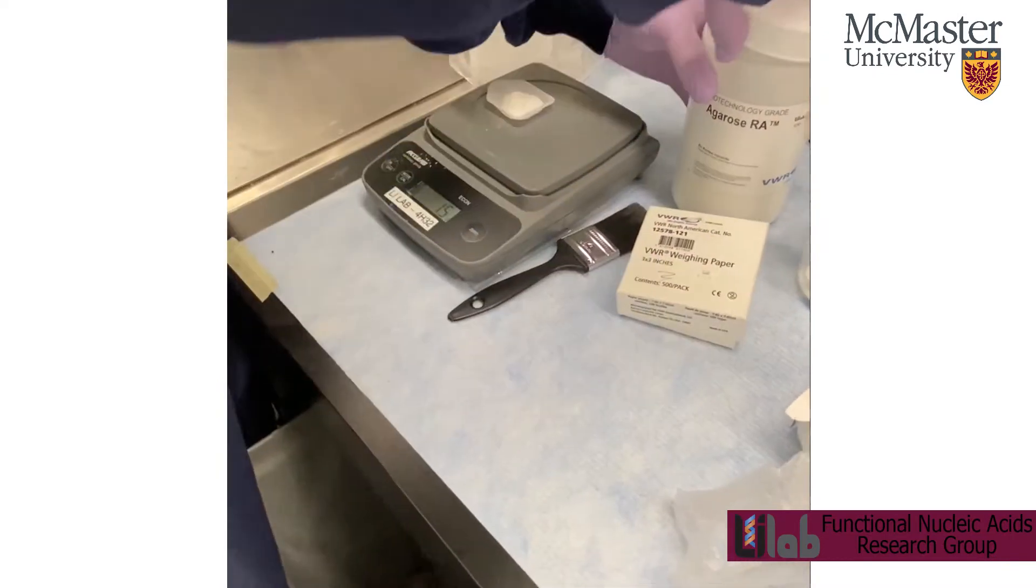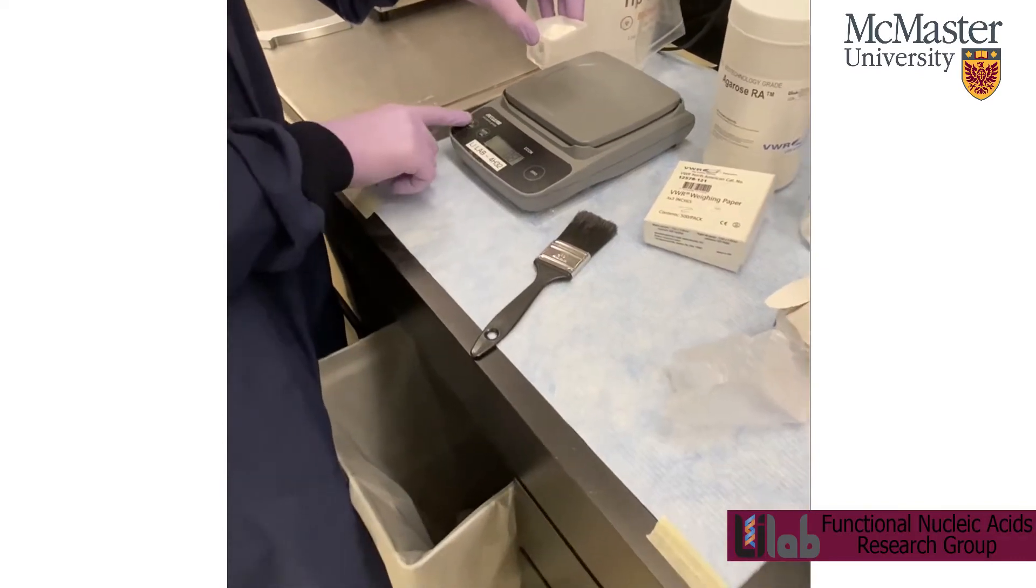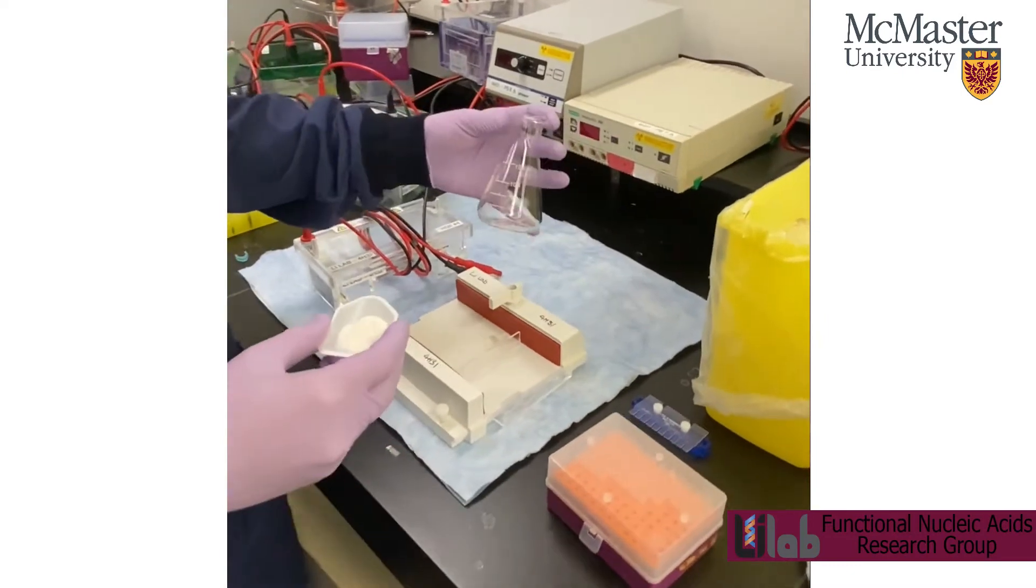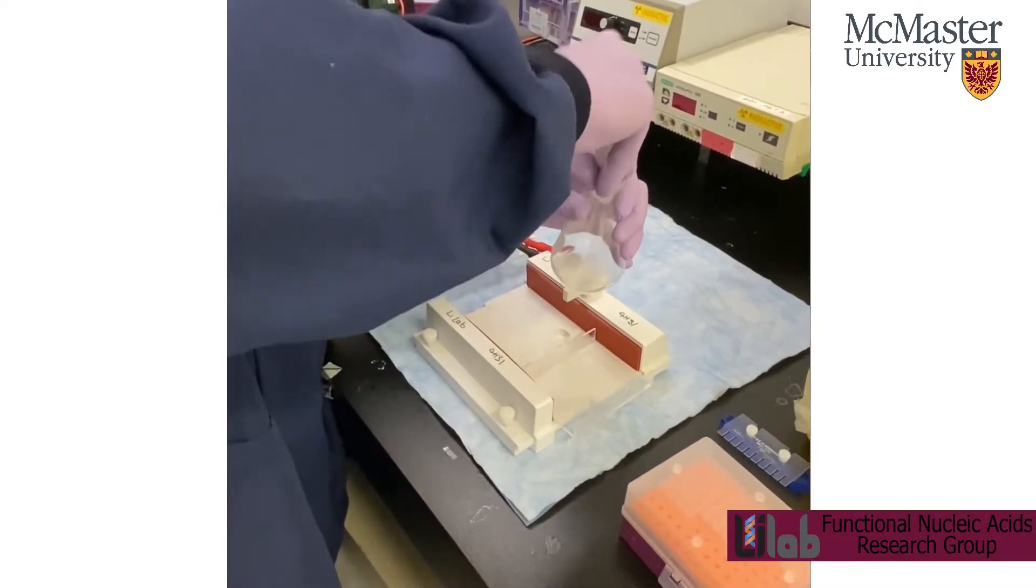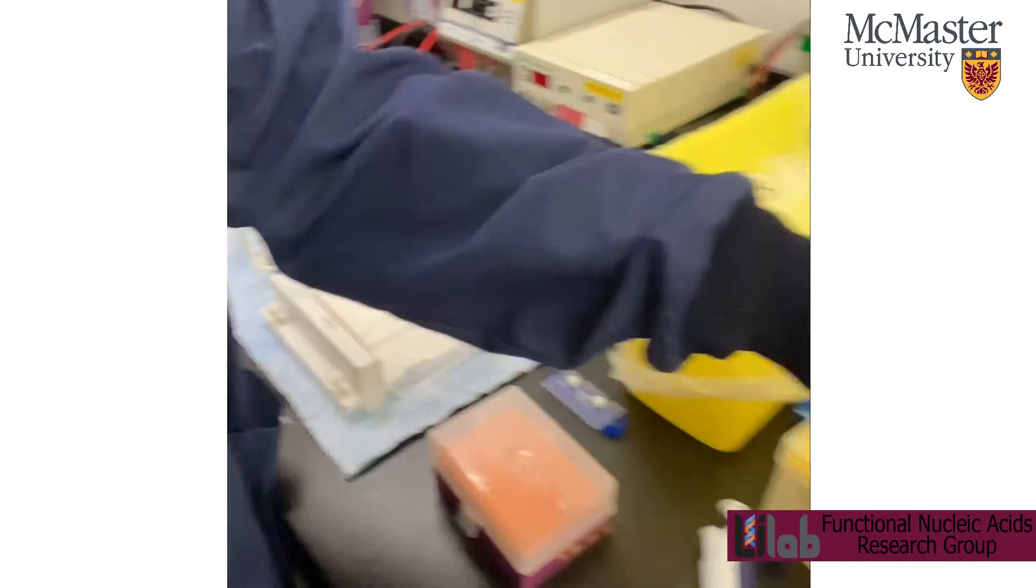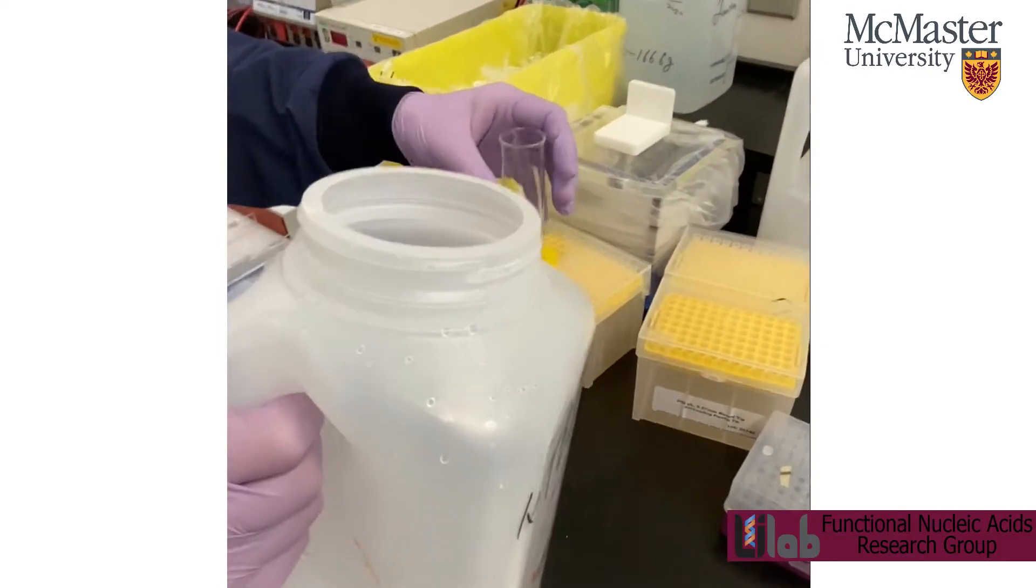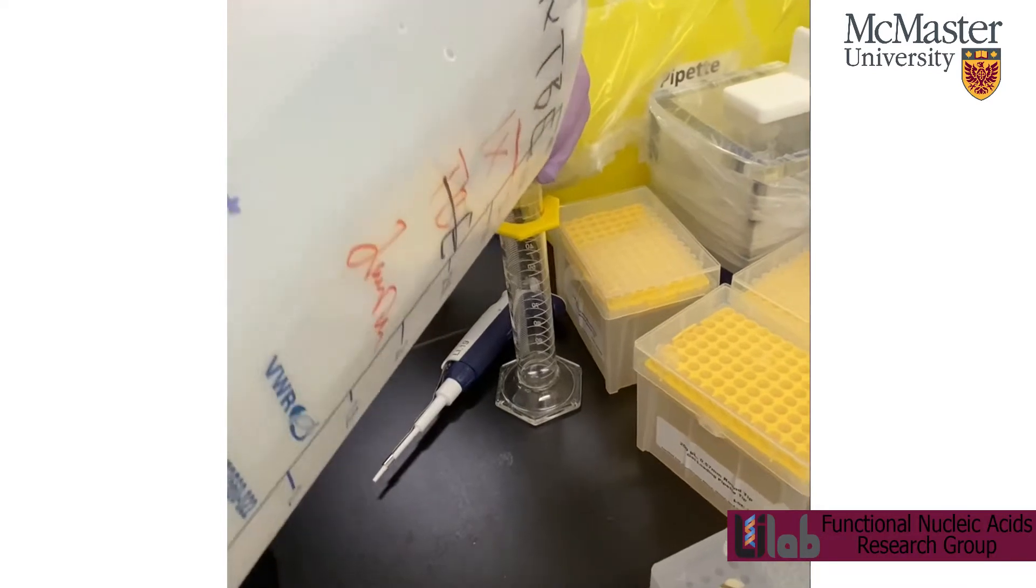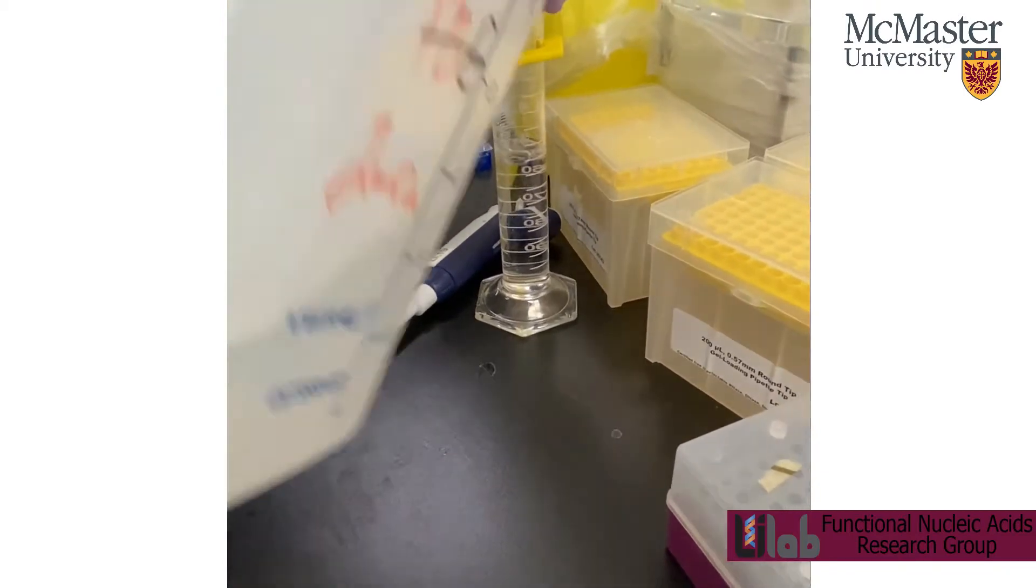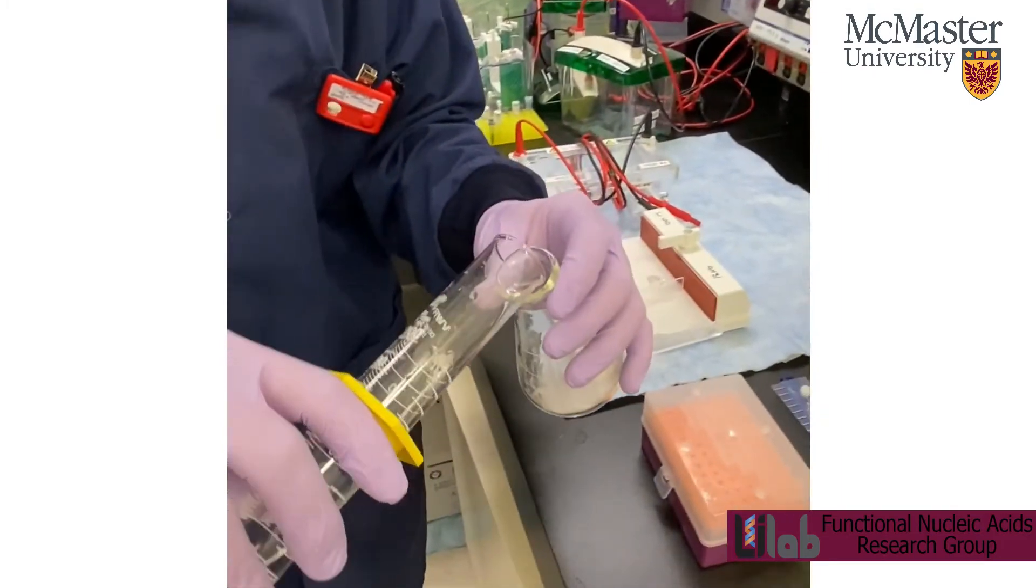Okay, so once you get the agarose you need, just turn that off. And then pour it in a 125 mil Erlenmeyer flask. This can just go in the garbage. Then pour it with 50 mils of TBE or TAE, depending on what you need. And then pour that into your Erlenmeyer with the agarose.